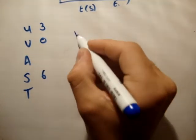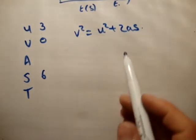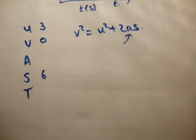What about v squared is equal to u squared plus 2as? Yes, that will work, because the only variable unknown is a. So, we'll go for that.